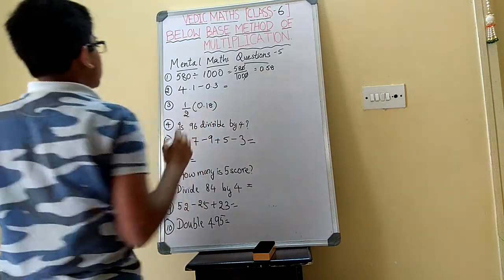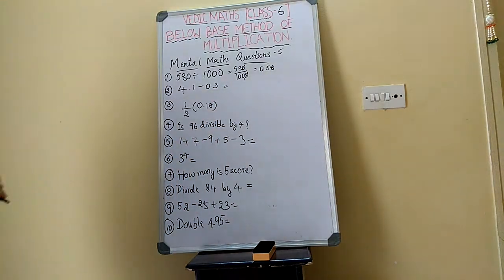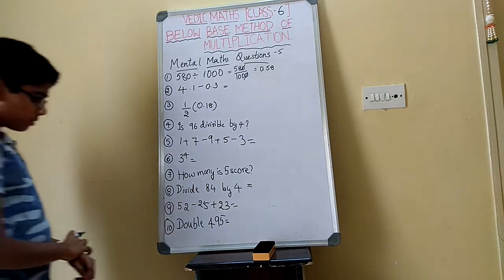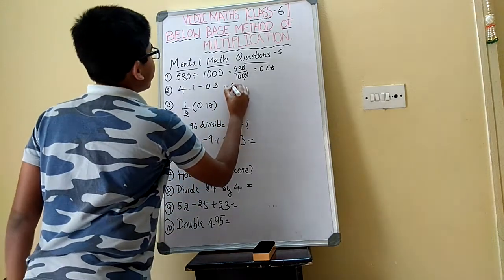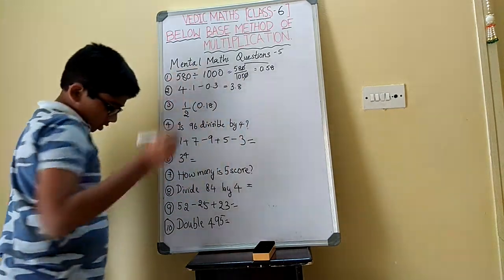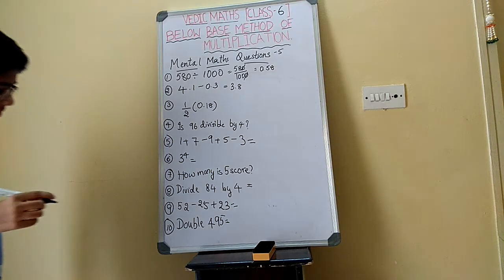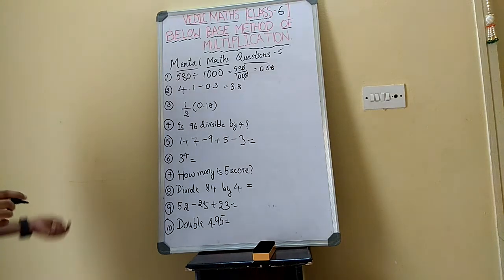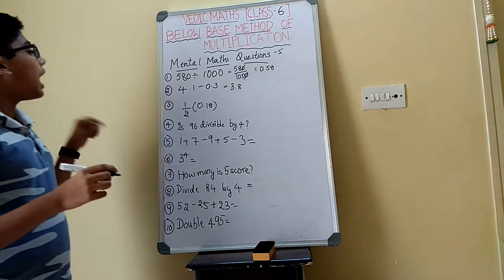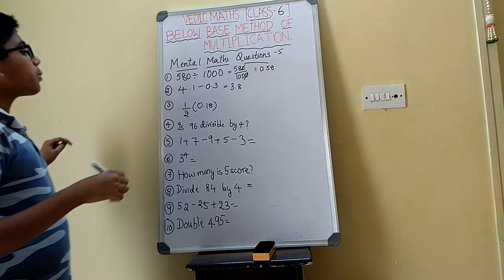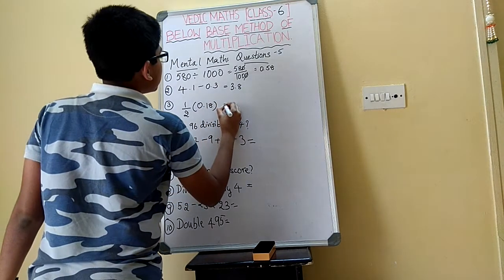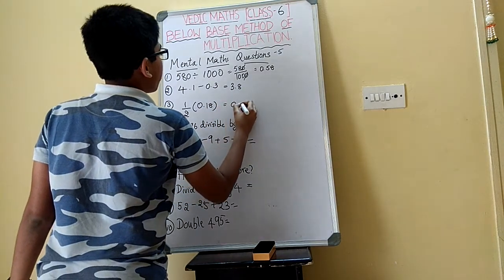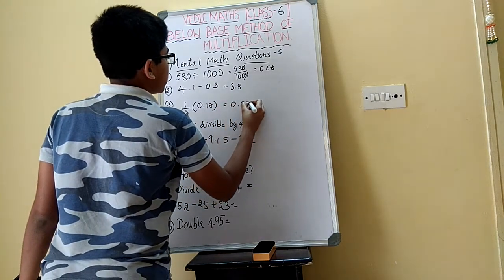Next one: 4.1 minus 0.3 is going to be 3.8. Then afterwards, half of 0.18 is going to be 0.09.